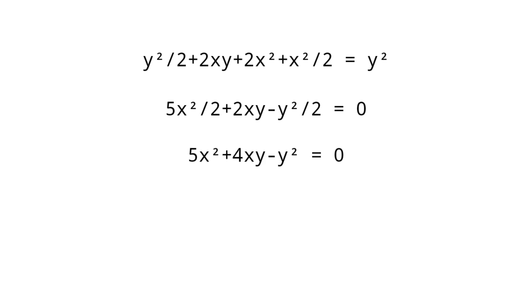Or 5X squared plus 4XY minus Y squared equals 0. So 4X squared plus 4XY plus X squared minus Y squared equals 0.